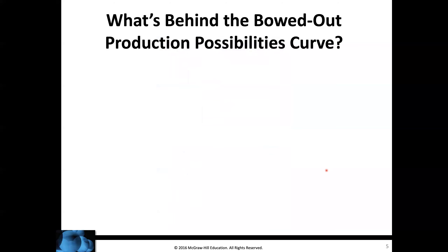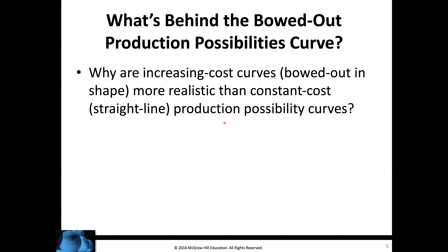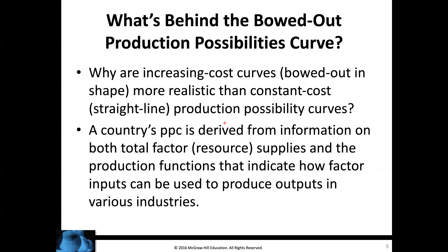So what's behind the bowed-out production possibility curve? When I say bowed out, I mean it's actually curved instead of being a straight line as in the last lecture. A country's production possibility curve is derived from information on both total factor or resource supplies and the production functions that indicate how factor inputs can be used to produce outputs in various industries.